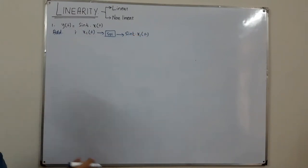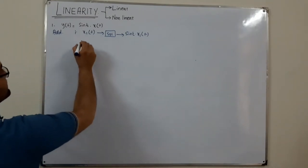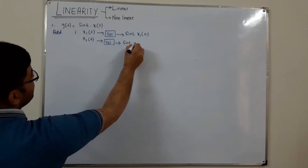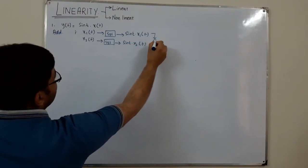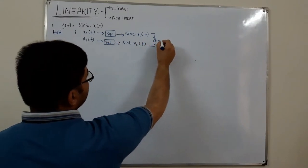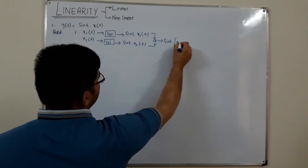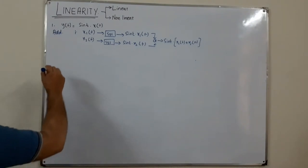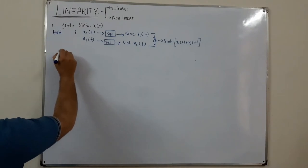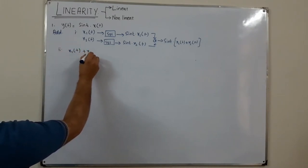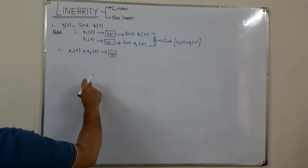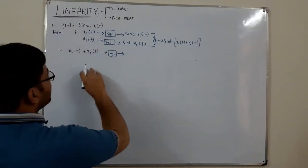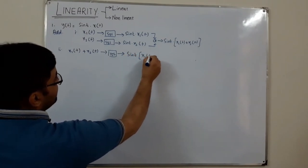For input x2(t), you provide it to the system and get sin(t)·x2(t). Now add these two together: take sin(t) common, giving sin(t)·[x1(t) + x2(t)]. In step two, add the inputs first — x1(t) + x2(t) — and provide it as a whole to the system. The system multiplies the current input with sin(t), giving sin(t)·[x1(t) + x2(t)]. These two are the same, so the additivity law holds.